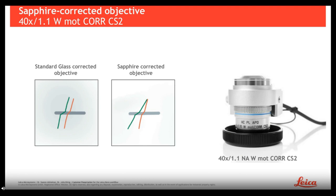We use a specific sapphire-corrected objective for a very important reason. The sapphire has different imaging properties compared to glass. If we used a standard glass-corrected objective, the green and red wavelengths would not focus at the same focal position because of the chromatic aberration of the sapphire, meaning the picture would appear blurry and we wouldn't be able to target very precisely. With the sapphire-corrected objective, this chromatic aberration of the sapphire is corrected so that the different wavelengths focus again at the same z-height inside the sample.